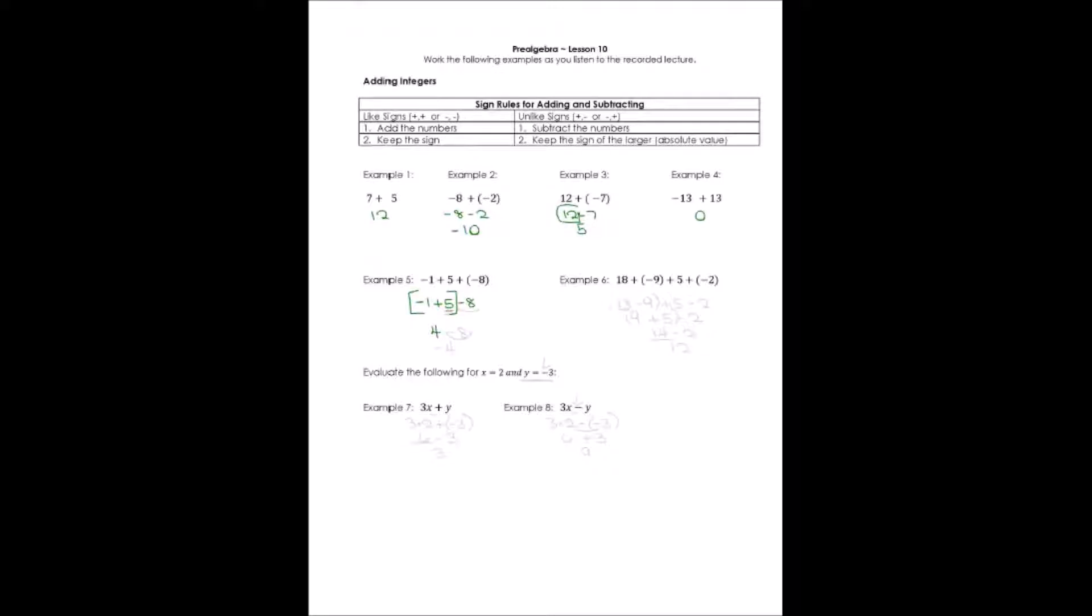I'm going to keep the sign of the larger one, which was the 5, so it's positive. And then I'm going to bring down the rest of that expression, the negative 8 or minus 8. 4 minus 8, opposite signs, so I have to subtract. I keep the sign of the one that's larger, so it needs to be a negative 4 is my answer.